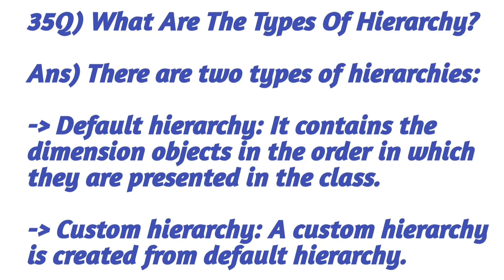What are the different types of hierarchy? There are two types of hierarchies: default hierarchy and custom hierarchy. Default hierarchy contains the dimension objects in the order in which they are presented in the class. A custom hierarchy is created from the default hierarchy.